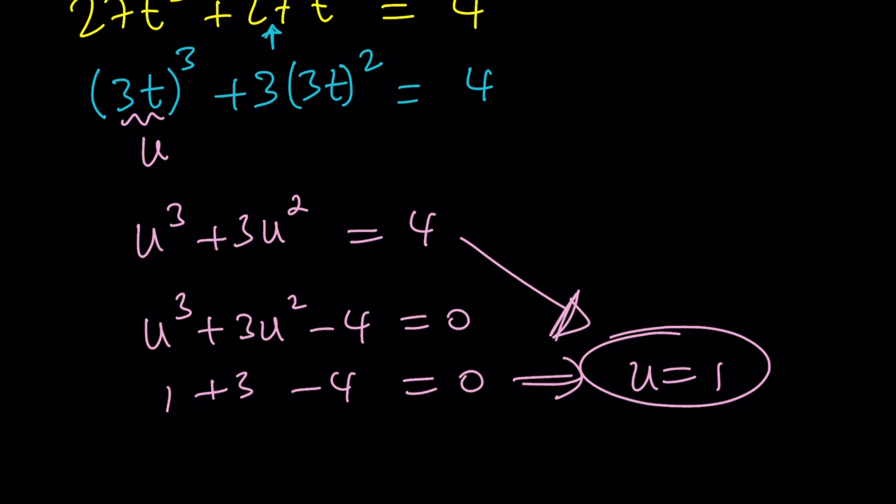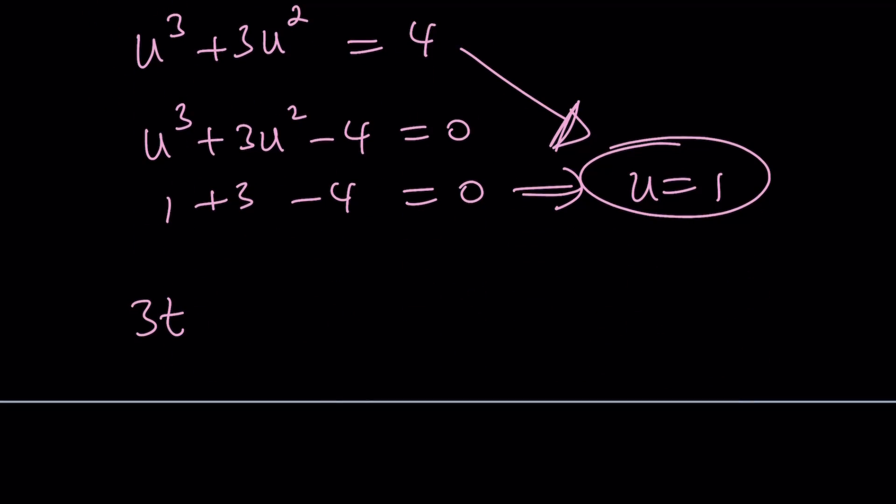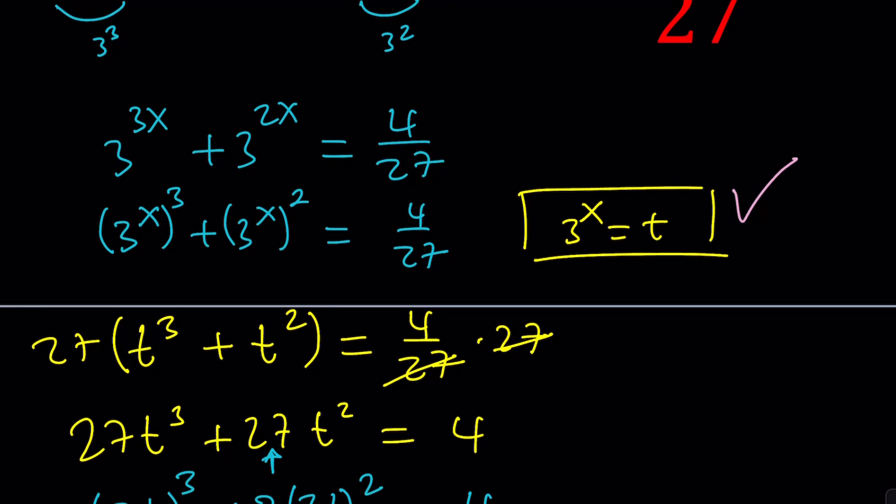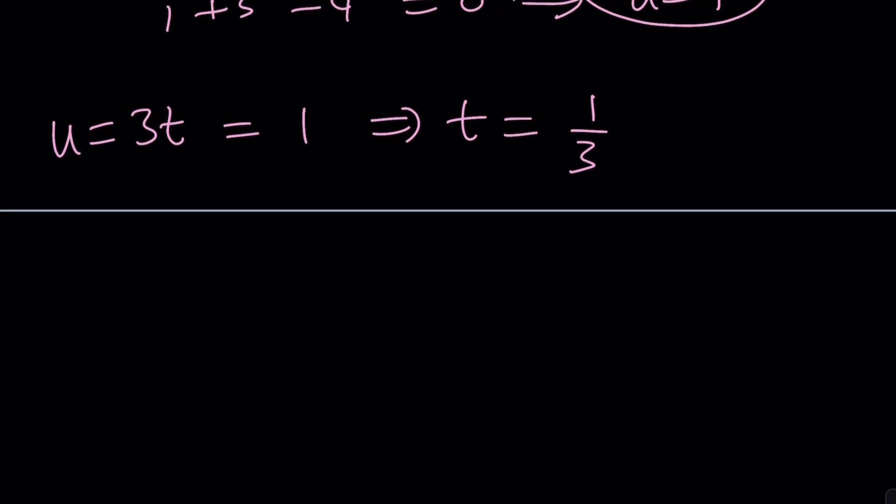So you see, that's one of the things that I always would like you to check. If you get a polynomial equation, always check for the sum of the coefficients. In this case, it's 1 plus 3 minus 4, which happens to be 0. That always means that u equals 1 is a solution. That's actually one of the trivial solutions that you will sometimes find. And then there is the negative one with the odds and evens and so on and so forth. But in this case, u equals 1 works nicely.